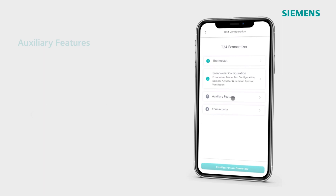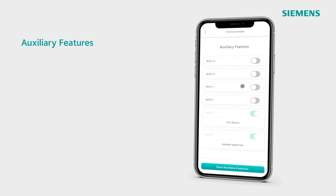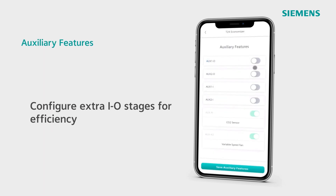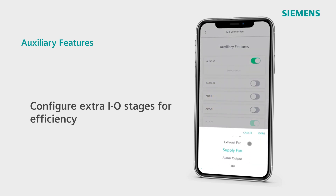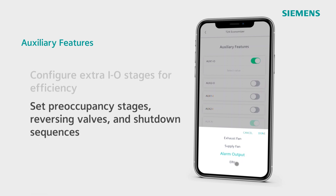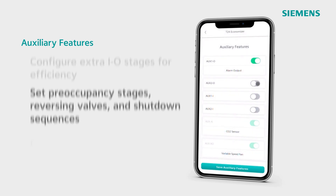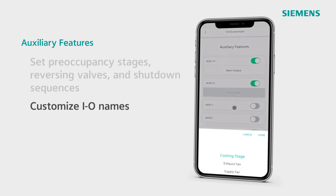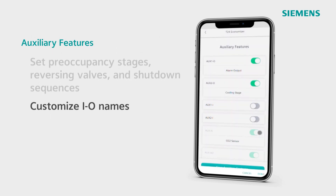Next, let's look at auxiliary features. Climatics Eco has additional input/output, allowing you to choose extra stages of cooling, exhaust fan, supply fan, alarm output, or an energy recovery. You can also set pre-occupancy stages, reversing valves, and shutdown sequences. The input/output names will be updated in the configuration according to the options that you choose.